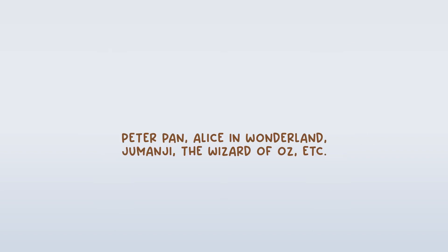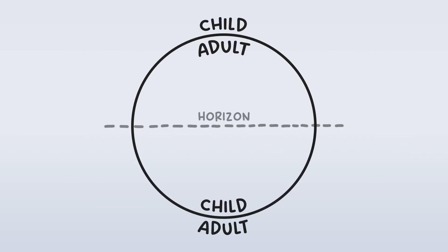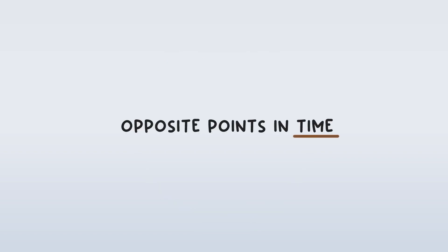I also think it's interesting that a lot of these stories are specifically bedtime stories — so the story itself is this transition between being awake and being asleep, this transition between the world of reality and the world of your dreams. Children and adults are opposites. They are at opposite stages of life, opposite points in time.